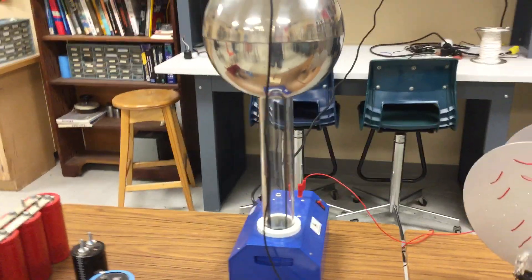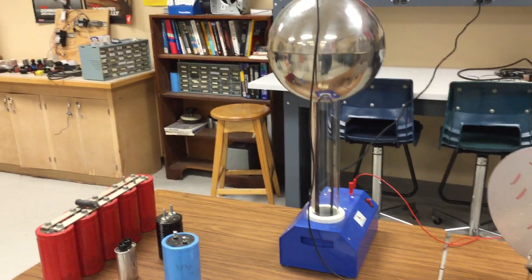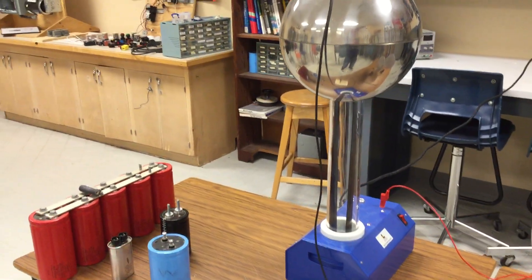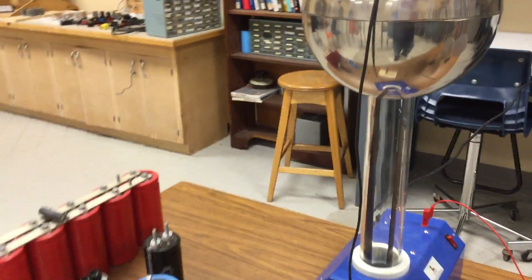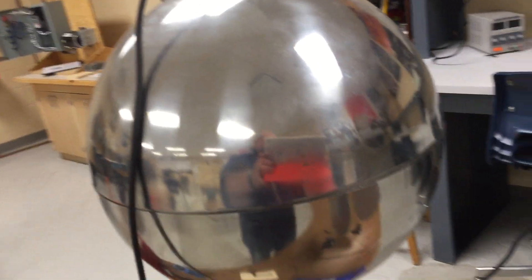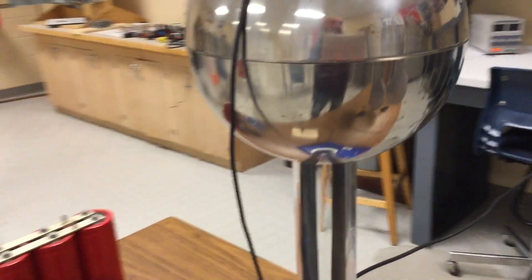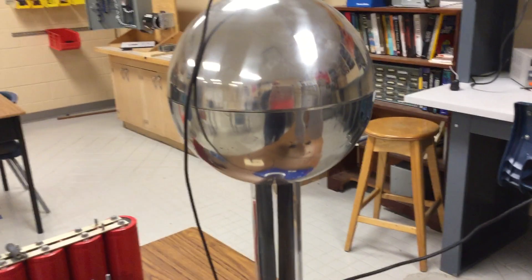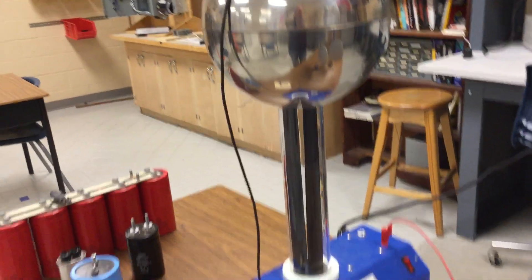Providing our juice today will be our Van de Graaff generator. Now all the Van de Graaff generator does is it takes some electrons from down inside there, puts it on the rubber belt and then deposits all the electrons on the big shiny globe at the top. So that's going to be providing our high voltage static source today.